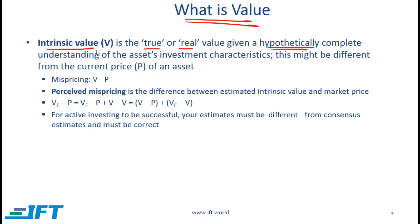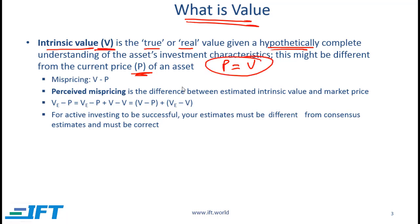We are going to denote intrinsic value with the symbol V. The current market price of an asset is given by P. For simplicity, we'll assume that we are talking about a publicly traded stock, so the current market price P is easily observable. In an efficient market, the price in the market will be equal to the value — this would be a completely efficient market.